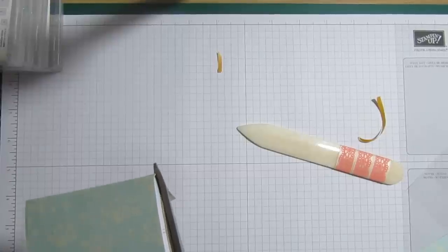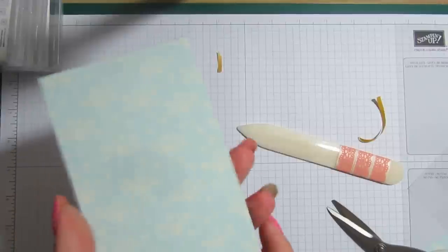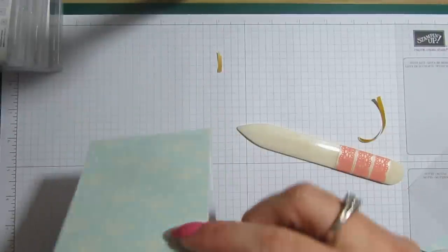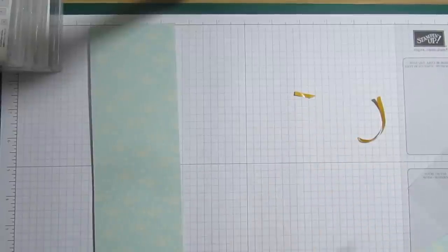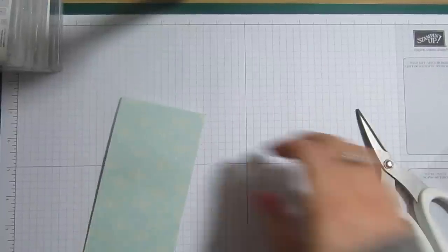And then just stick that to the back of your notepad. Just give it a press down. And I'll just rub my bone folder over the top of there as well. Make sure it's stuck. And then if there's any little bits sticking over, I'll just trim them with the scissors. So, there you have a beautiful notepad.